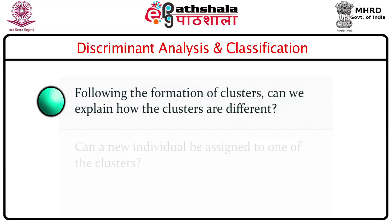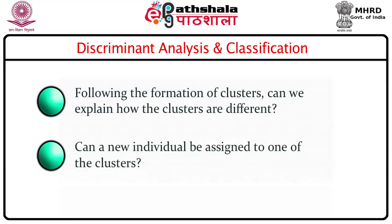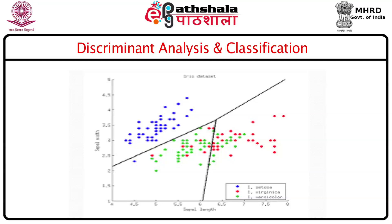We look at ways of defining these clusters. The first question is: can we explain how the clusters are different or similar among themselves? This is answered by discriminant analysis, which studies the properties of a given cluster and identifies the differences between clusters. Once clusters are formed and their characteristics identified, we ask whether a newly arrived individual can be classified into one of the given clusters. This is the problem of assigning new individuals to clusters, referred to as a classification problem.